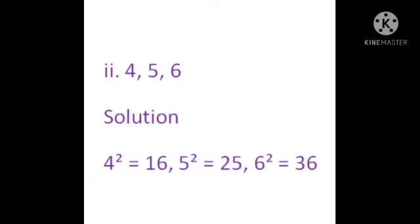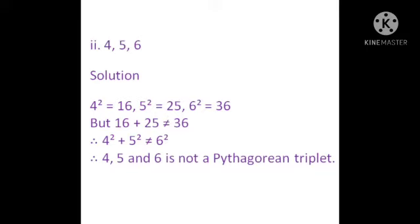Sub-question 2: the numbers 4, 5 and 6. First we find the squares: 4 squared is 16, 5 squared is 25, and 6 squared is 36. Now let us add the squares of the smaller numbers: 16 plus 25 equals 31, which is not equal to 36. Therefore, 4 squared plus 5 squared is not equal to 6 squared. Therefore, 4, 5 and 6 is not a Pythagorean triplet.